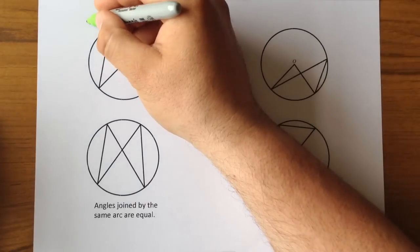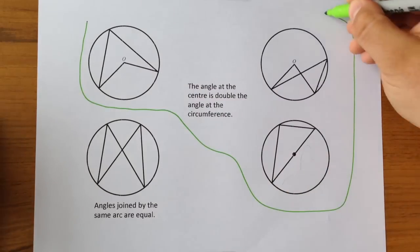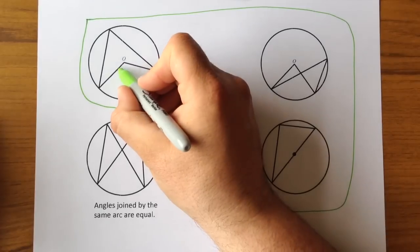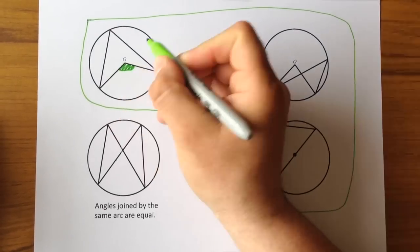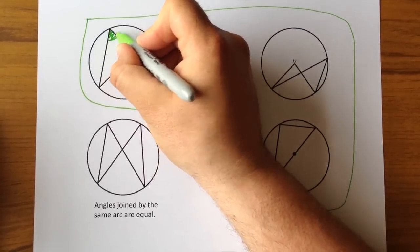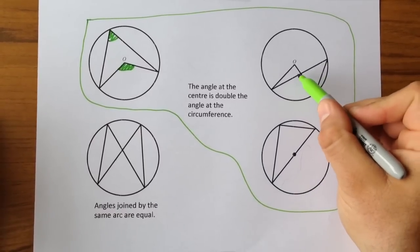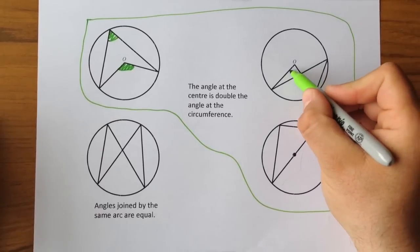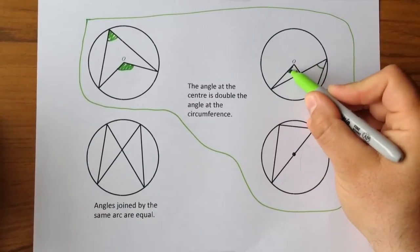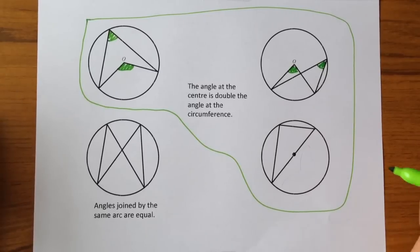That could look like any of these three situations here. It means that angle is twice as big as that angle. Now this is the type of situation that often gets missed — that angle there is twice as big as that angle there.